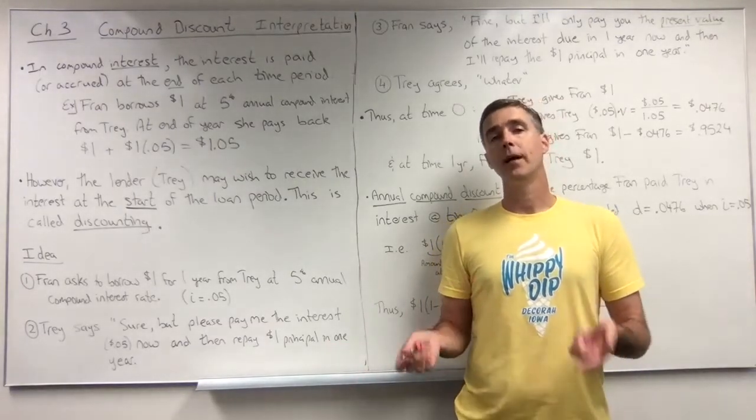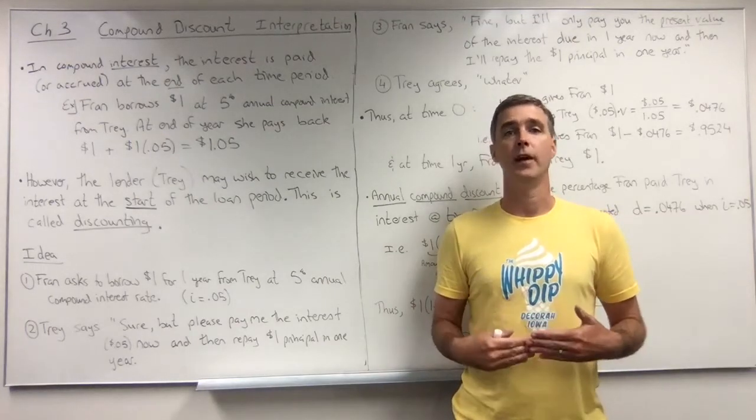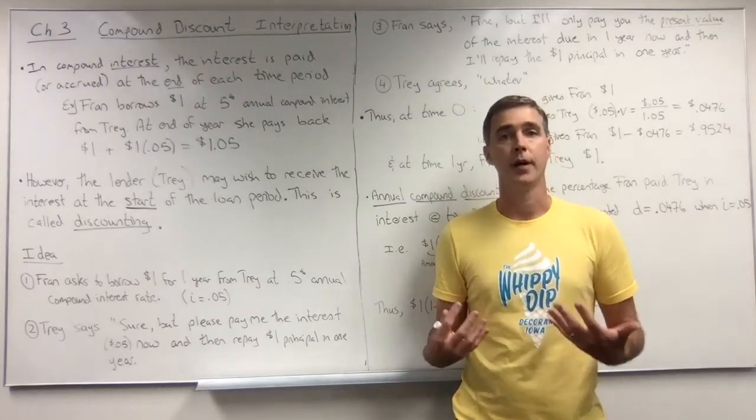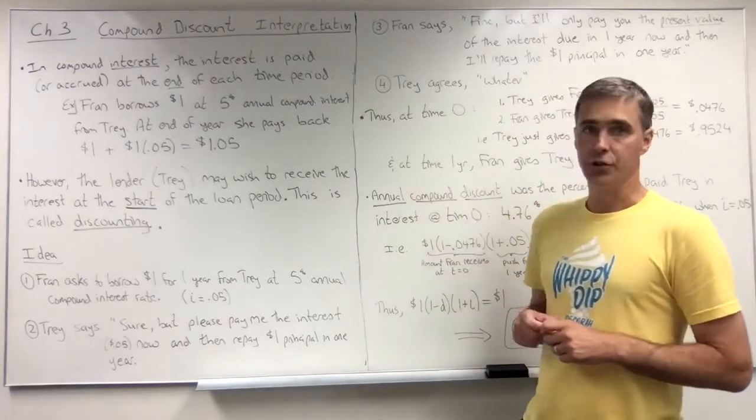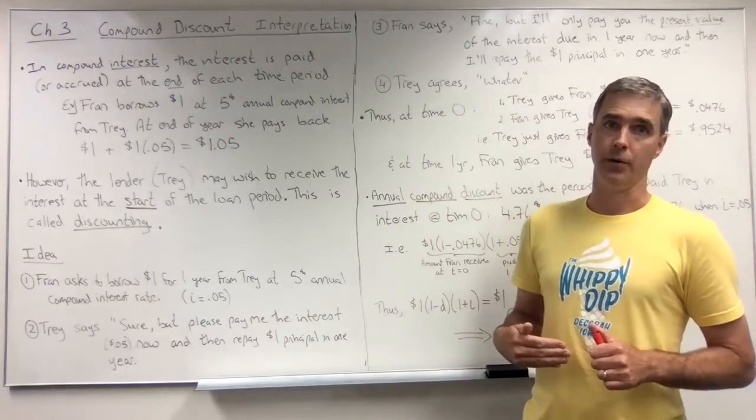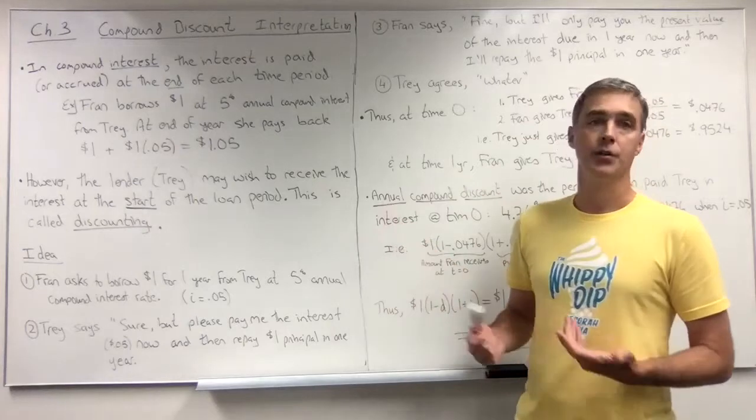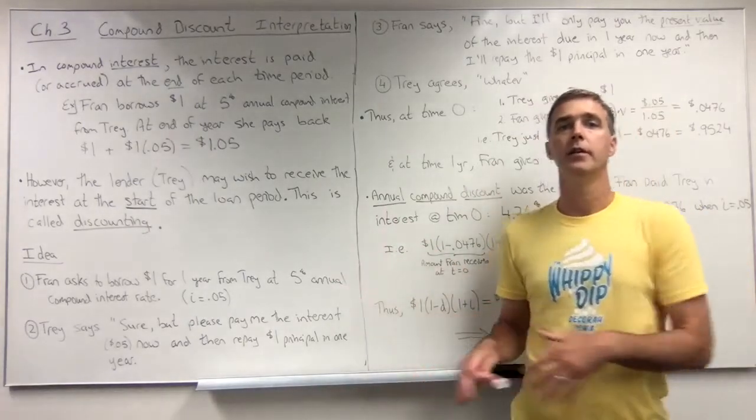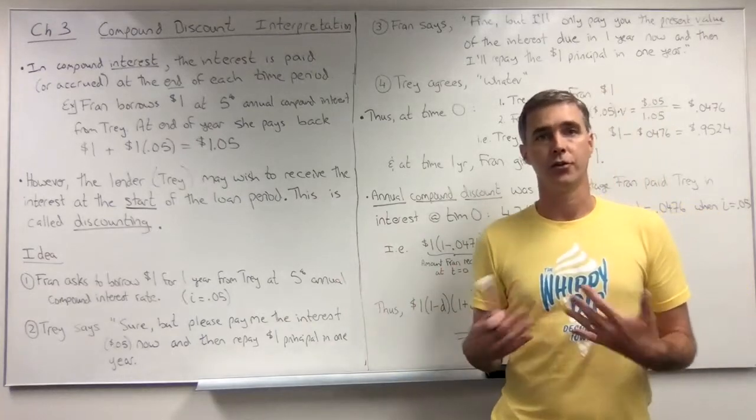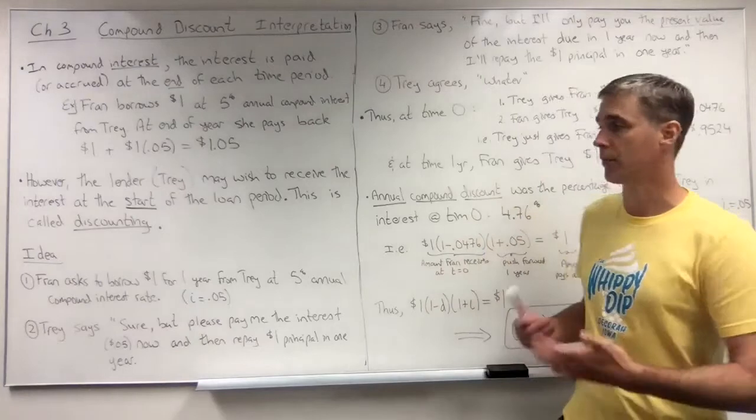So he might prefer to get some money out of Fran up front, sort of like a good faith collateral type payment. So Trey the lender may wish to receive the interest at the start of the period, not at the end of the period. This is called discounting. I'm going to walk through the idea via a conversation that Fran and Trey might have to illustrate how discounting differs from compound interest.